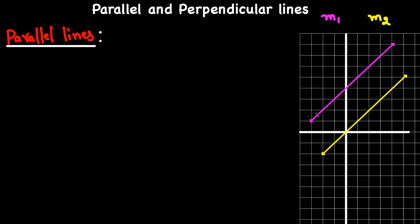Let's start with parallel lines. If two lines — say a pink and yellow line — are in the same plane, they are parallel if their slopes are equal to each other. Conversely, if two lines have the same slope, that means they are parallel to each other in this plane.